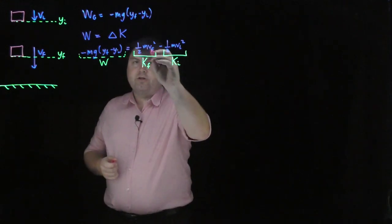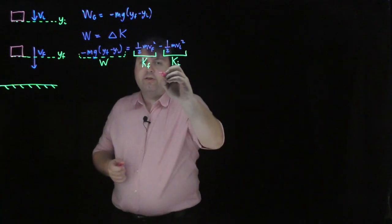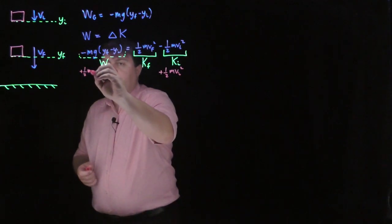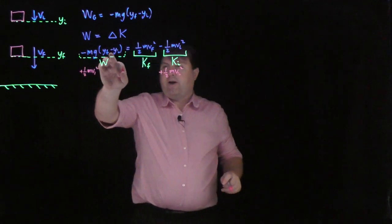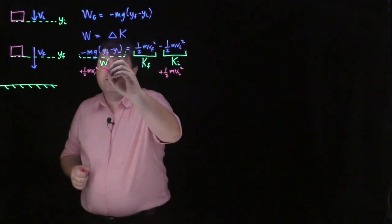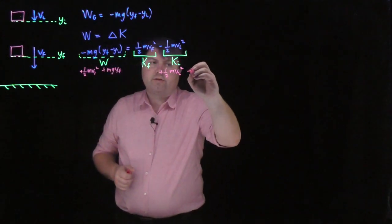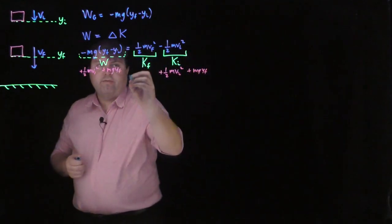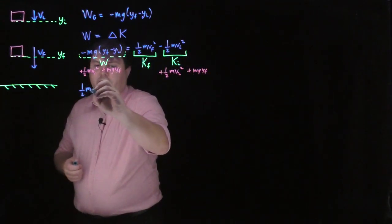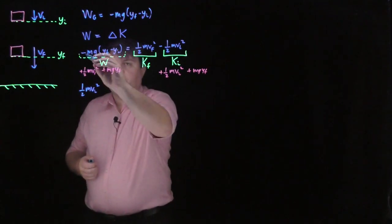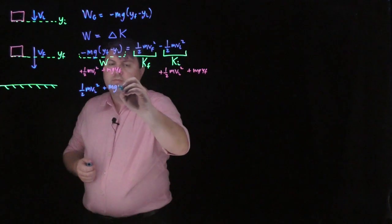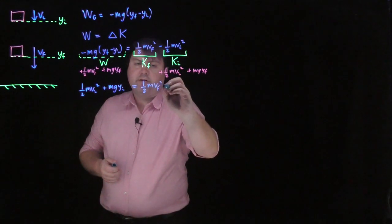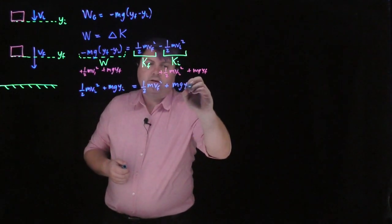We can move the initial kinetic energy over by adding one half mvi squared to both sides. Then to bring the final gravitational term over, we add mg·yf to both sides. When we do that, we get on the left side: one half mvi squared plus mg·yi, and that equals one half mvf squared plus mg·yf.